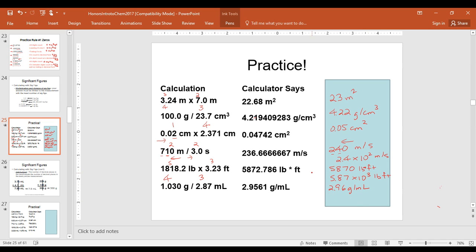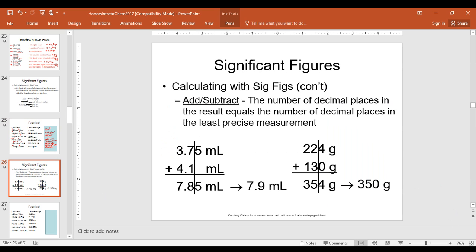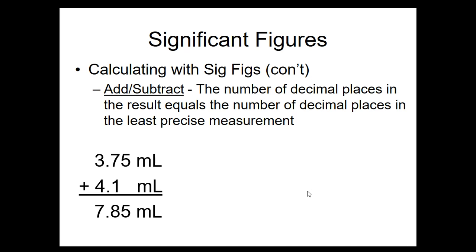Now I want to go over how to do addition and subtraction, which are a little bit more difficult for students. When adding two numbers, you drop a line after the last significant figure in the number with the least number of significant figures after the decimal. Our answer would be rounded to 7.9 — that's to the tenths place — since 4.1 is the least precise of the two measurements.